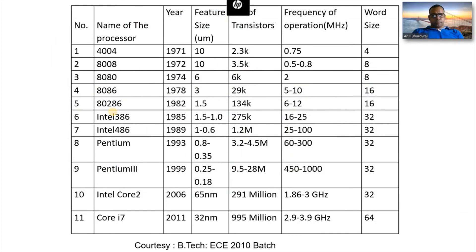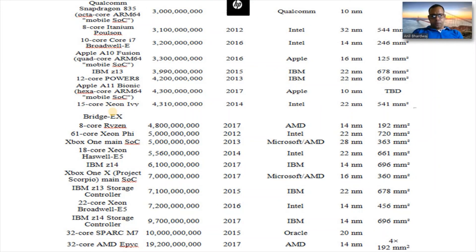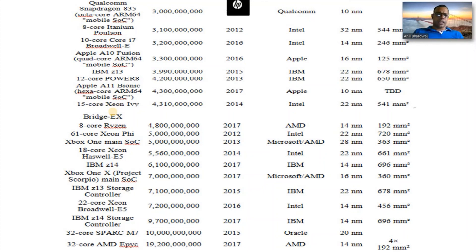Up to 2011, you can see 1 billion transistors in Core i7, 64-bit. Then 2 billion transistors in AMD and Oracle products. This is all because of scaling — you can see 14 nanometer, 20 nanometer, and so on. The area is also consistent, and in the meantime we are actually increasing the number of cores.